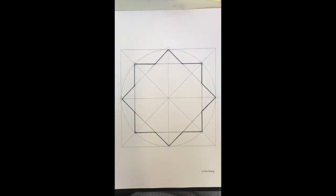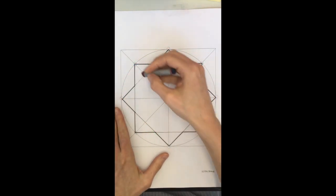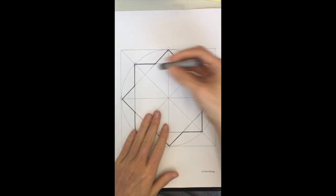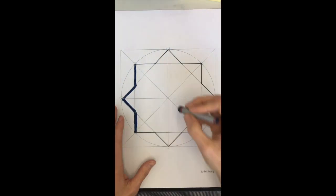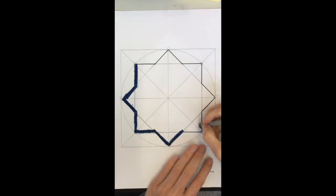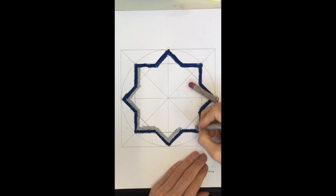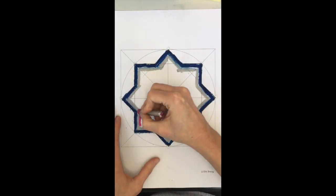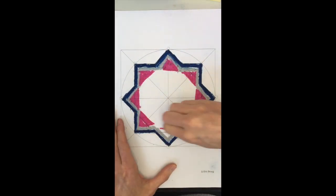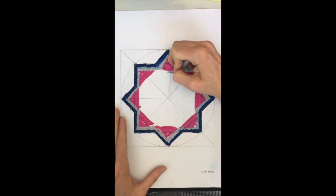If you prefer to just draw directly on the pattern you drew, oil pastels or markers or crayons are a good option for you. Begin by tracing the outer edge. Then change your color. You can change your pattern or your design and just color towards the center of the star.